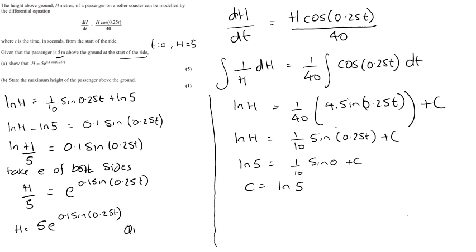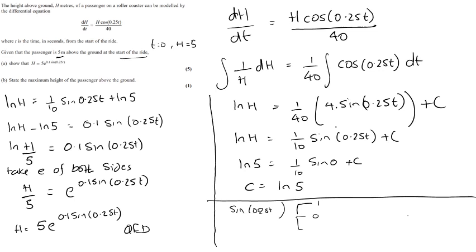That's a QED — the correct answer shown. Now the question asks for the maximum height above the ground. The maximum value of sin(0.25t) is 1. Substituting sin = 1 gives h = 5·e^(0.1), so h_max = 5.53 metres.